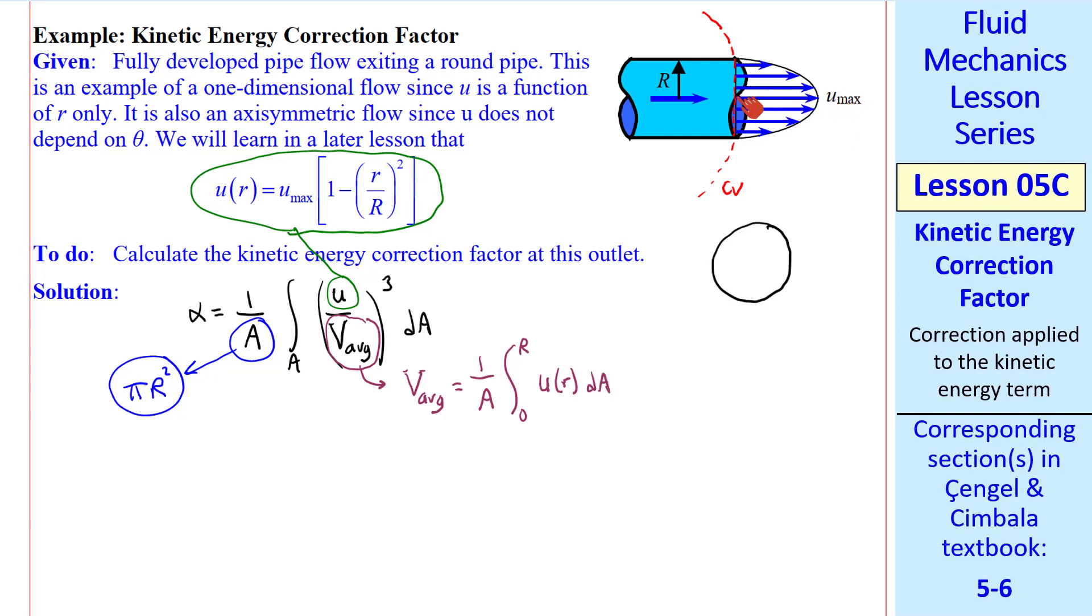u(r), times dA. If we look straight on into this pipe, we would see a circle, and we're letting our area element, dA, be a small ring of dimension dR, this little width, and then 2π gives us the whole ring. So dA is just 2πr dR. So v_avg is 1 over the area, πR², integral from 0 to R, and we plug in our u(r) equation from up here, 1 minus r over R squared, 2πr dR.